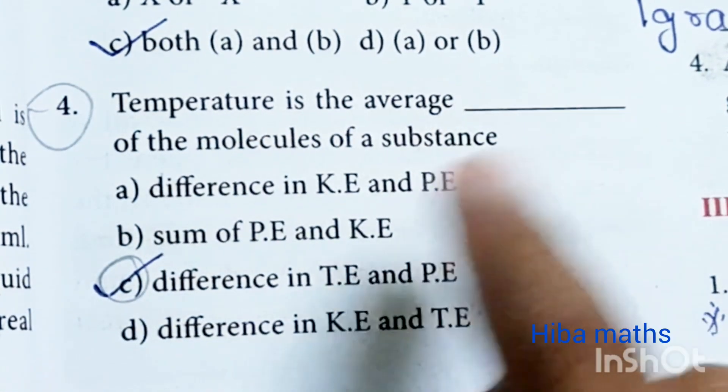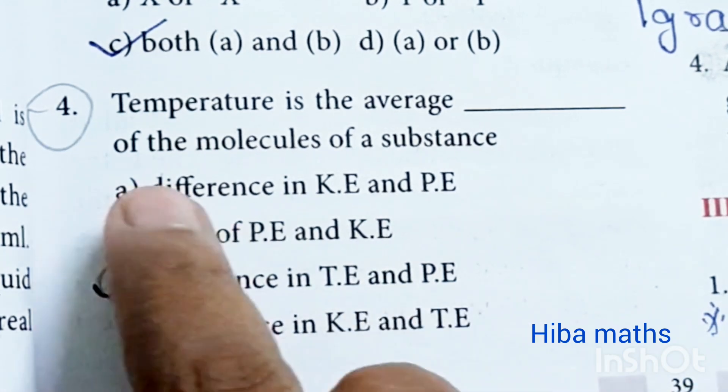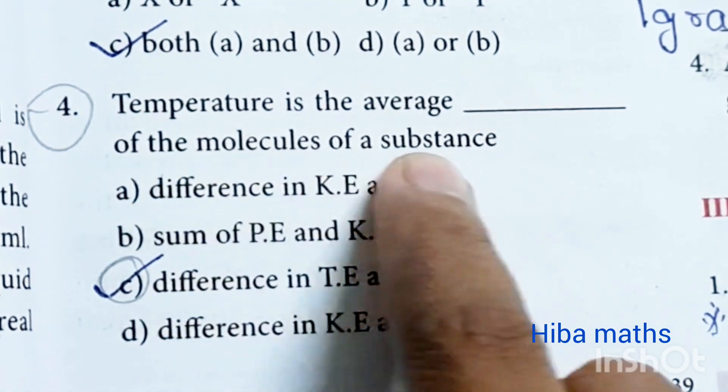Temperature is the average difference in KE and PE of the molecules of the substance.